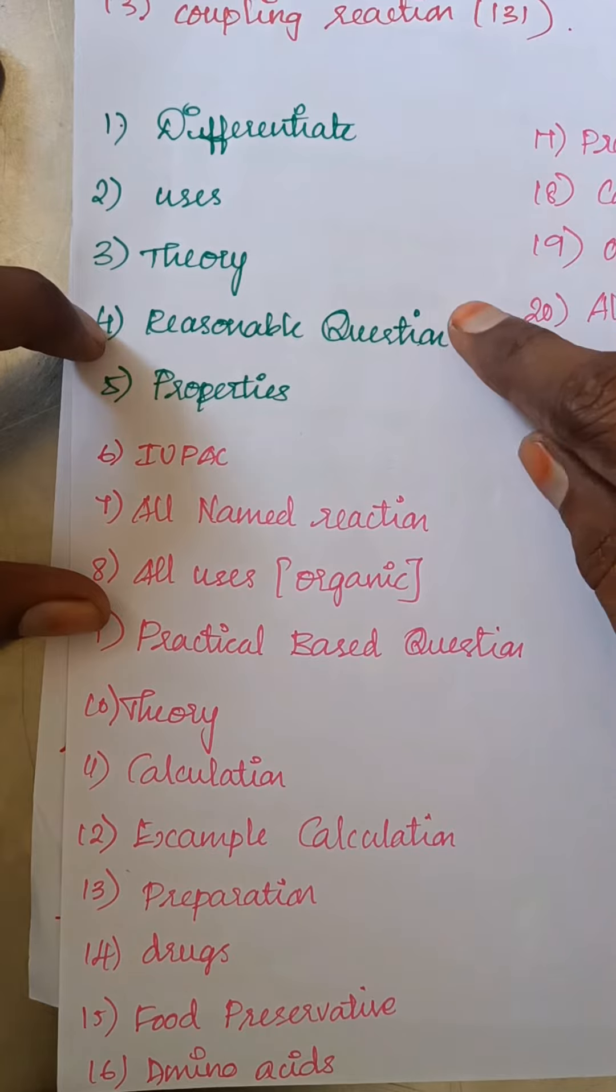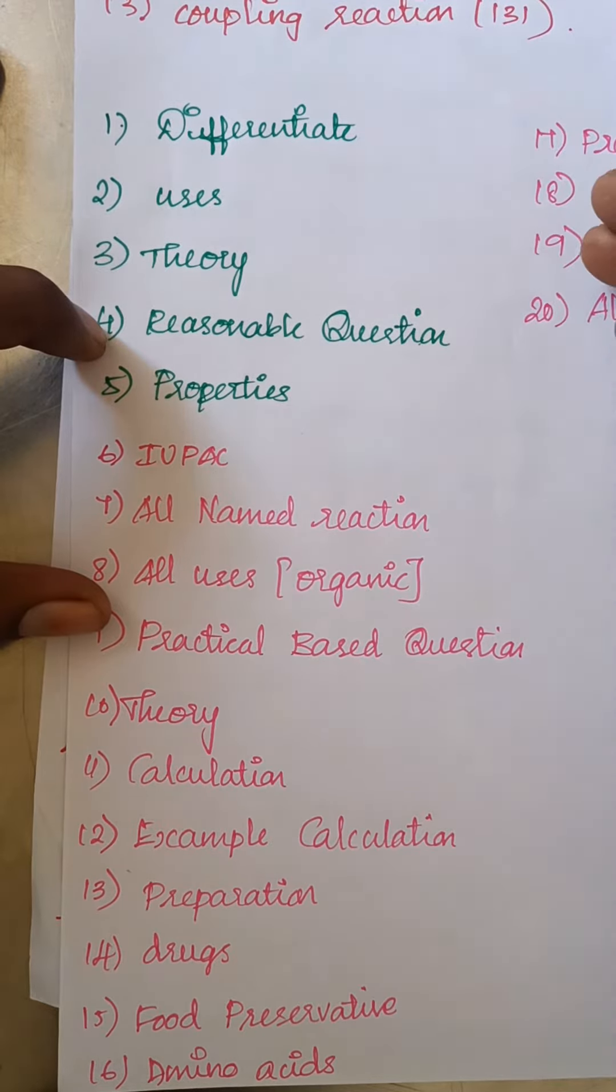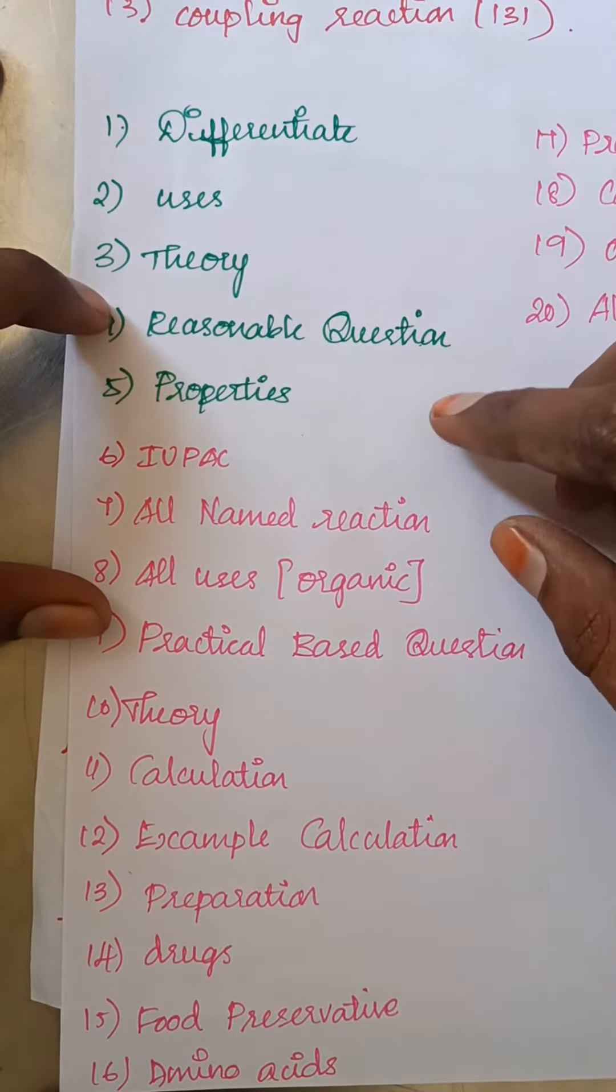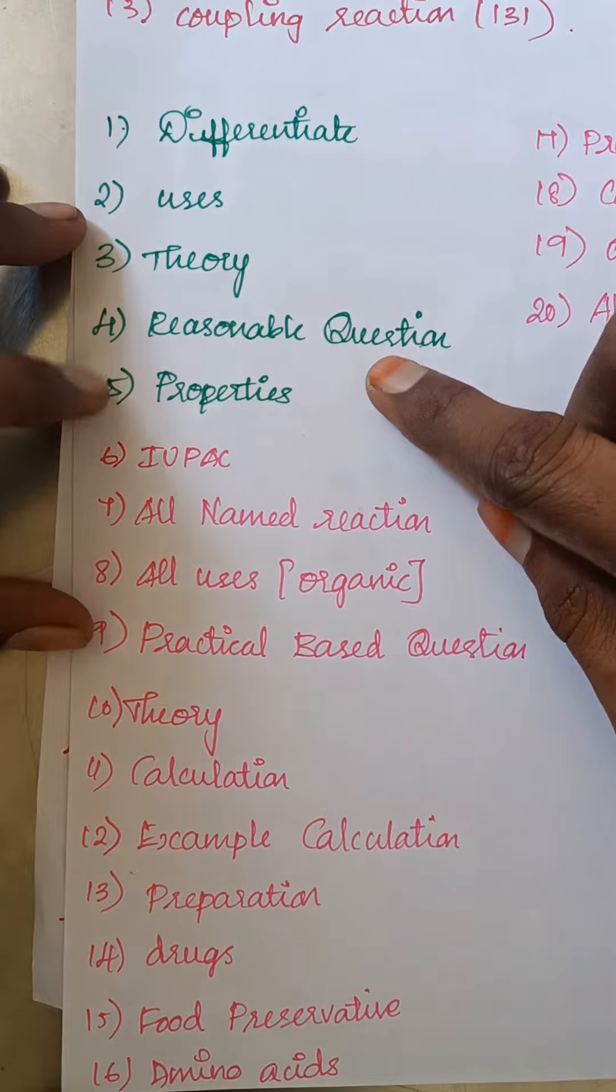This is a reasonable question. Stable, unstable, FE2+, FE3+, what color is colorless, paramagnetic, diamagnetic, all these questions. What are the properties?